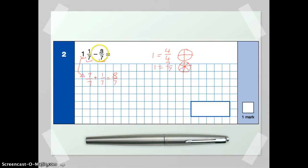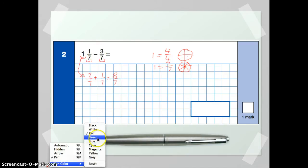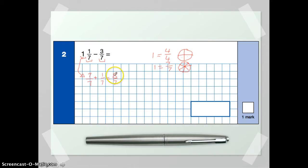So as we're subtracting, though, we don't need to worry about that. So now that we've turned our mixed fraction into a top-heavy fraction, now we're going to do this next bit here where we're going to subtract the three-sevenths.